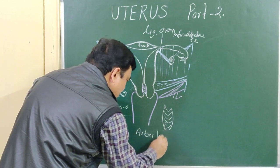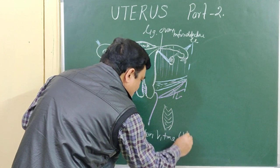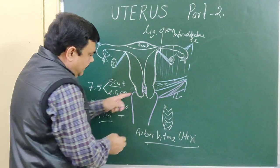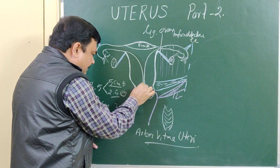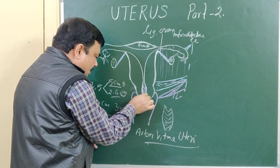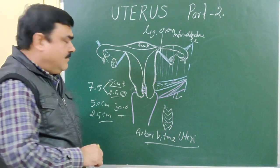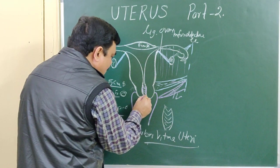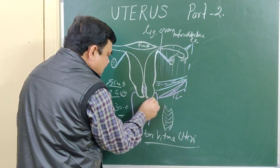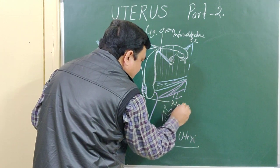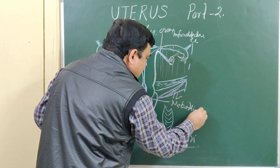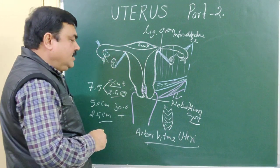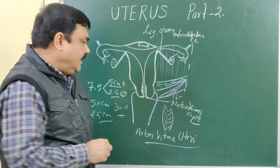At the junction of the inner part and the outer part, sometimes cysts are formed. These are mucus cysts known as Nabothian cysts — also called Nabothian follicles or ovula Nabothi.